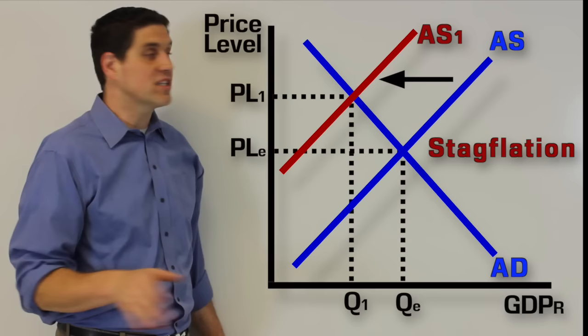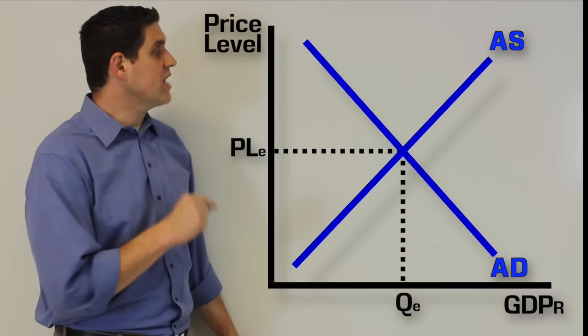The reason why is because we have inflation, a higher price level, at the same time as a stagnant, slowed down economy. Now all these things I've showed you are happening in the short run. Now it's time to talk about the long run.